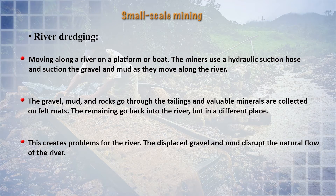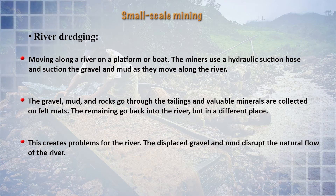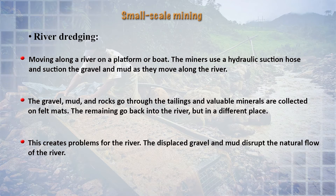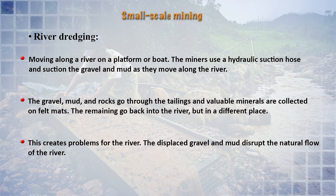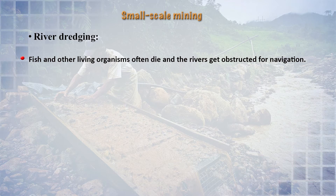Just like land dredging, there is also river dredging. People move in boats or stand on platforms near the riverside and use hydraulic suction hoses to suction gravel and mud from deep in the river. The gravel, mud, and rocks pass through the tailings, and valuable minerals are collected on felt mats while the remaining sludge goes back into the river — but at a different location. This displaced gravel and mud disrupts the natural flow of the river, blocks navigation, and can kill fish and other living organisms.